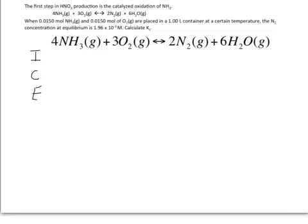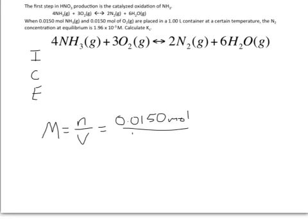Remember, whenever we're working equilibrium problems, we either need to work in concentrations or we need to work in pressures. Because we're told that this is a Kc, we want to convert the moles of our reactants into concentrations. The equation for molarity is that molarity is equal to moles divided by the volume in liters. So in this case, for both the ammonia and the oxygen, I have 0.0150 moles divided by 1.00 liters, so the concentration is just 0.0150 M.